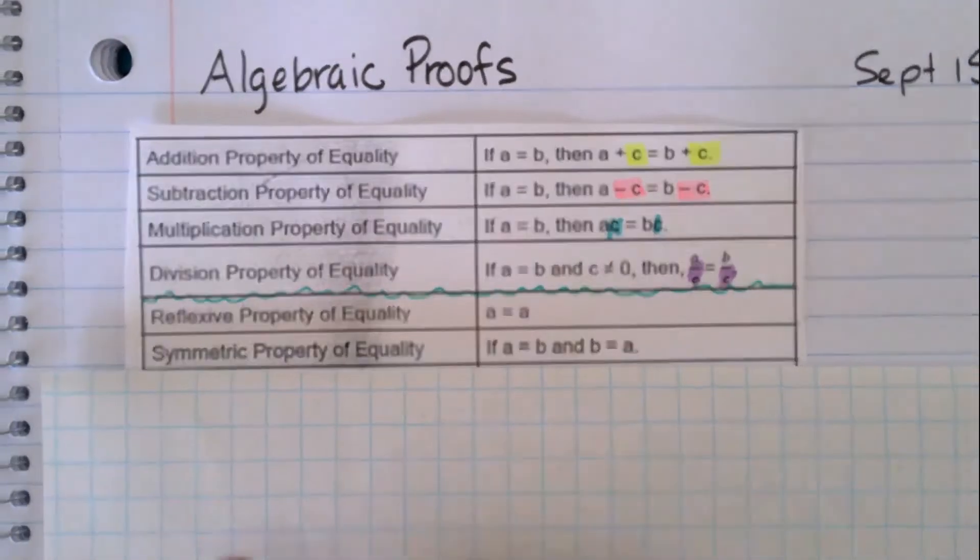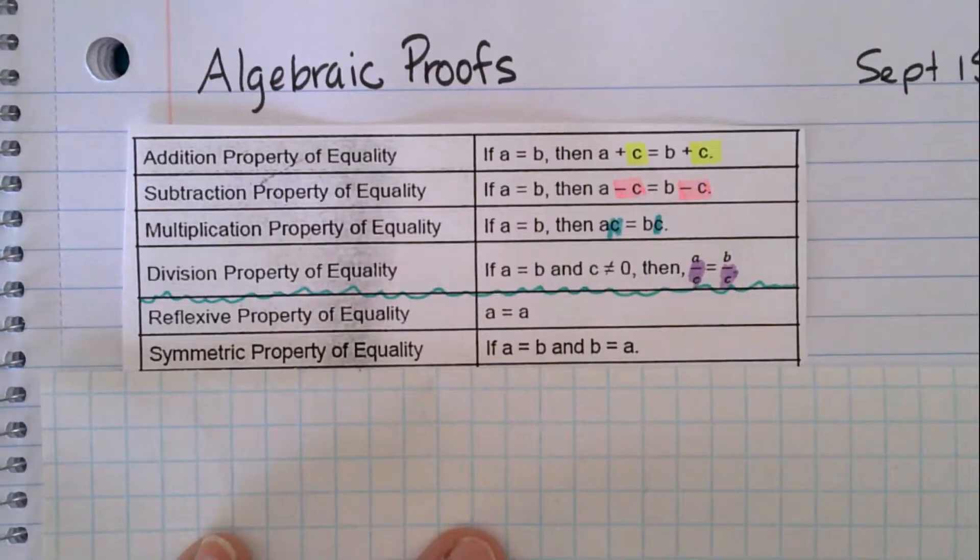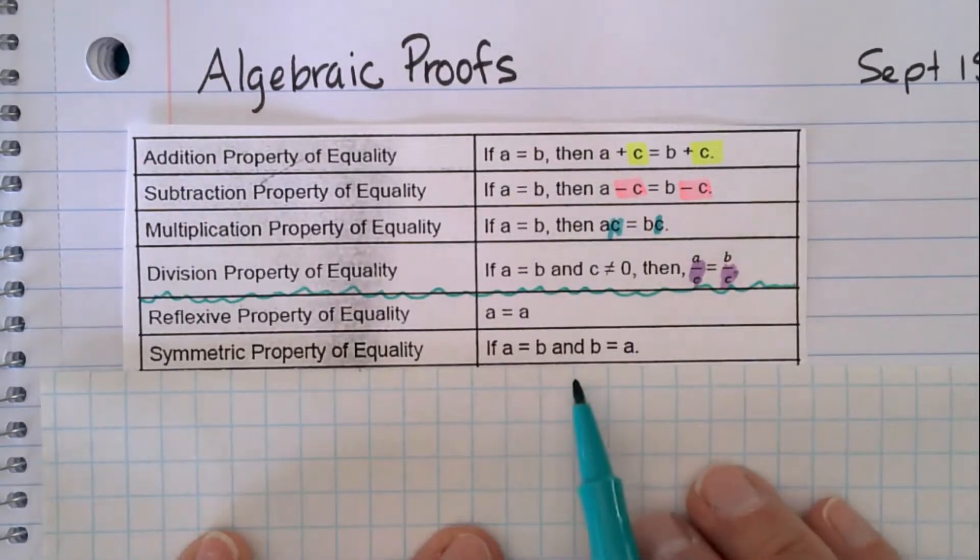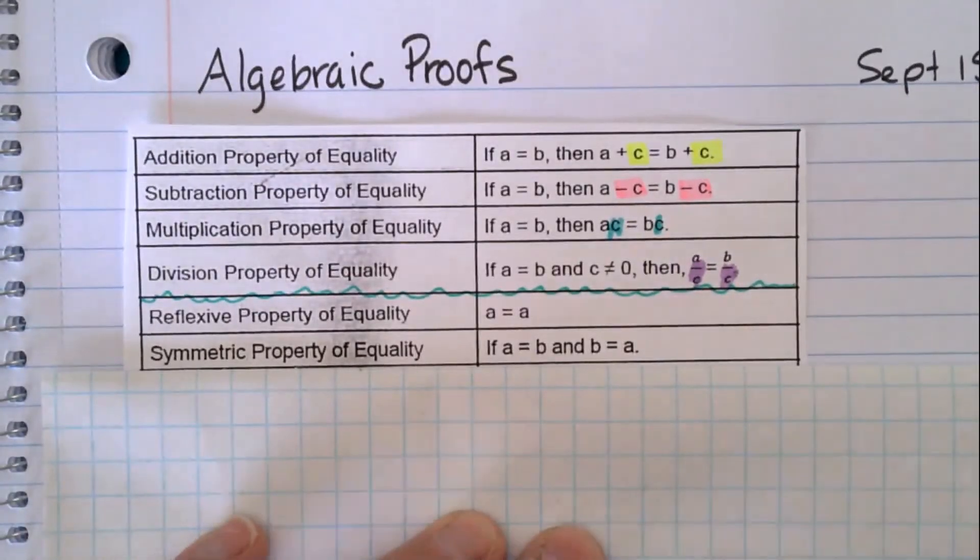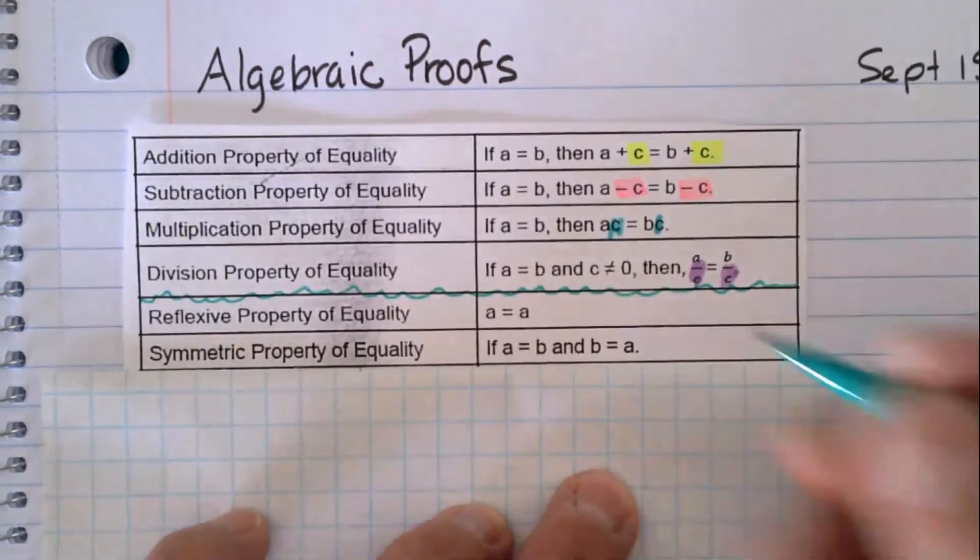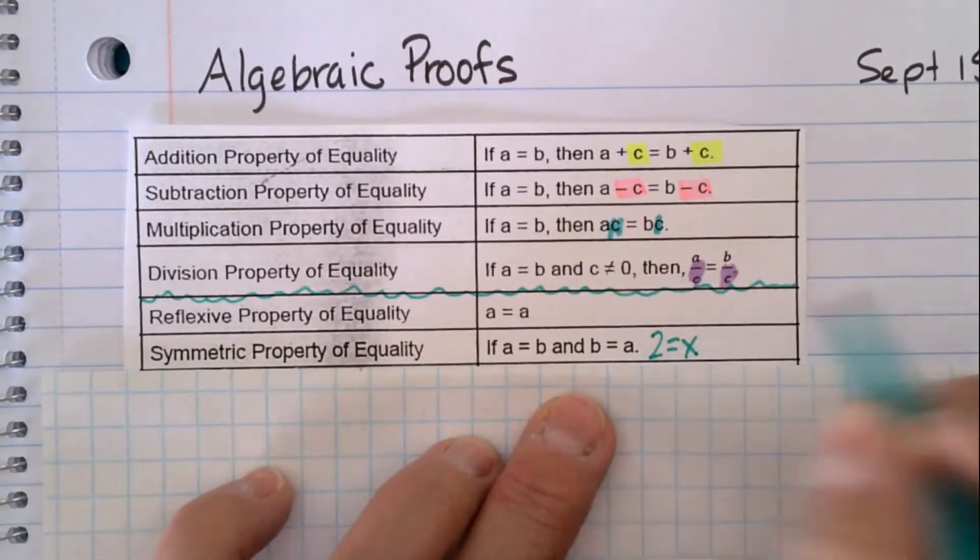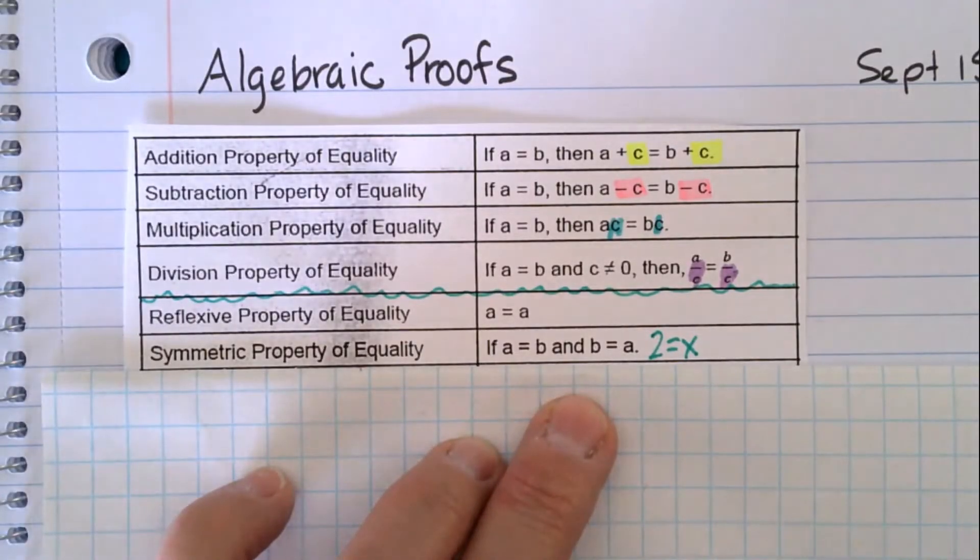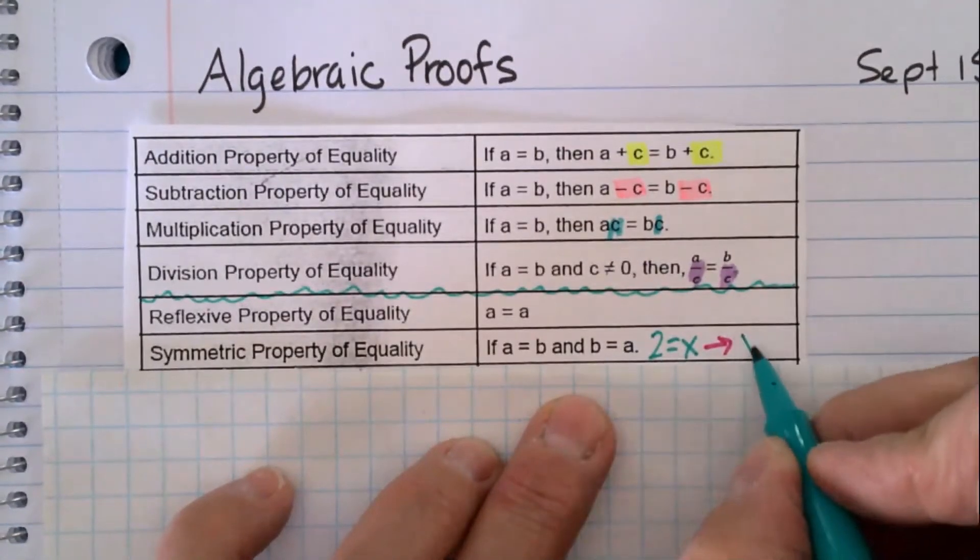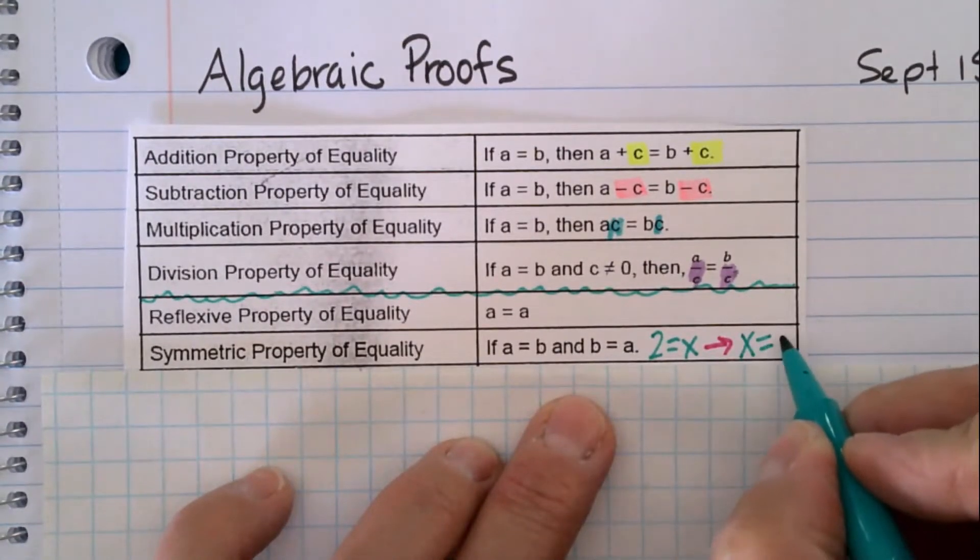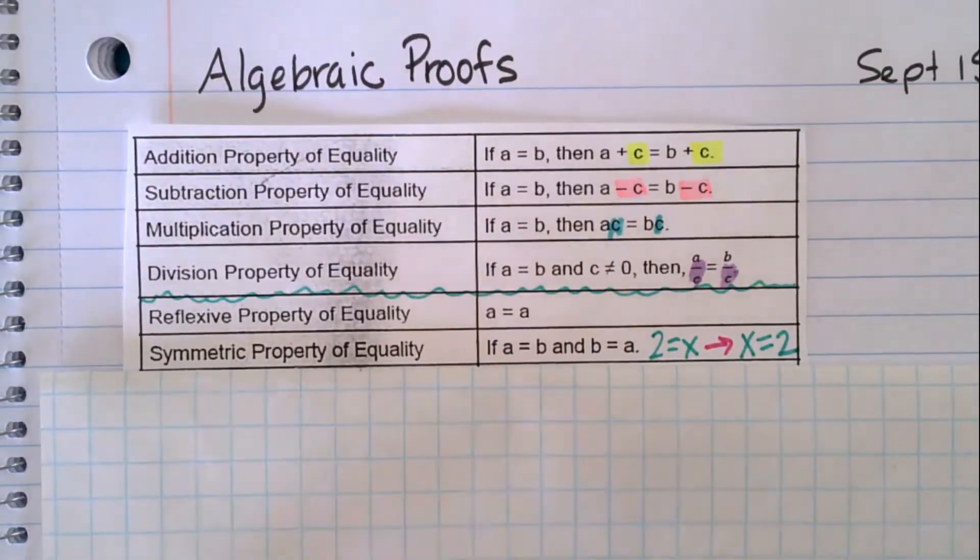Symmetric property of equality. This is one we do use in algebra. So it says if a equals b then b equals a and that's still kind of a duh. But how this shows up when we use it in algebra: let's say you solved an equation and 2 equals x was the solution, and then at the very end, you wanted to rewrite it because you like the x to come first. The reason you're allowed to do that in math is called the symmetric property of equality.